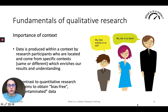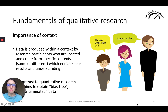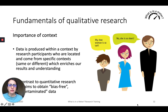This brings me to the importance of context. Data is produced within a context by research participants who are located and come from specific contexts, which enriches our understanding and results. The results of our research are both a product of the people taking part — those we are interviewing or participating in focus groups — as well as the researchers and how they are conducting it using what methods. So the idea of bias-free or uncontaminated data is not the goal and not the purpose.